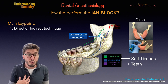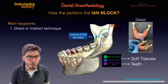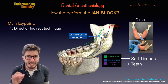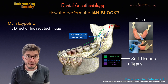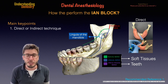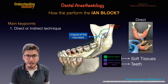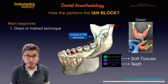What I usually do is use the direct technique when I need to do a restorative dentistry or endodontic procedure, because I target directly the inferior alveolar nerve. If I need to perform a lower surgery or extraction, I always proceed with the indirect technique — and you'll understand why — because we are going to target the three main nerves in the same procedure.